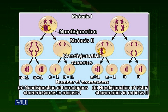The result is again called non-disjunction — no separation. One gamete is N+1, that is haploid number plus one extra chromosome, and the other one is N−1, that is haploid number with one chromosome less.